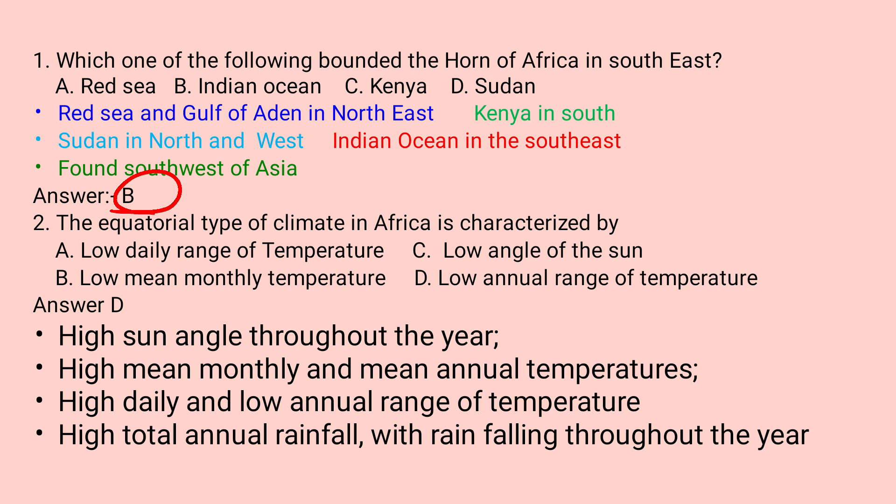Tropical regions are known for having high sun angles throughout the year because they are found in the tropics. They also have high mean monthly and mean annual temperatures, high daily range but low annual range of temperature, and high total annual rainfall throughout the year. So the answer is D — low annual range of temperature, which means between 1°C to 3°C.